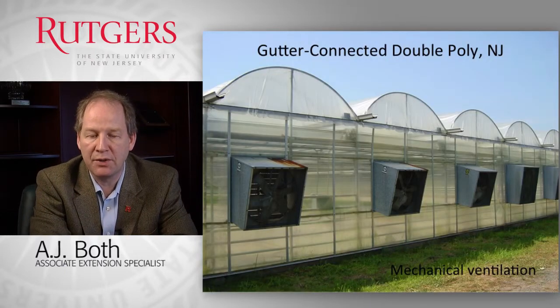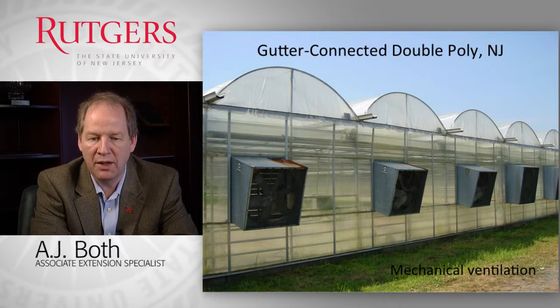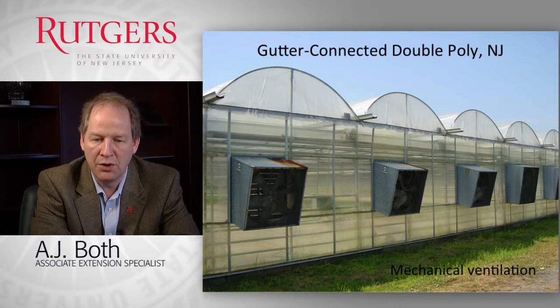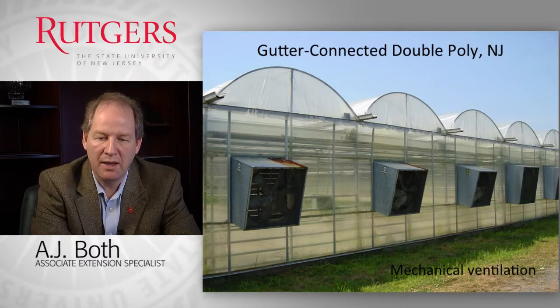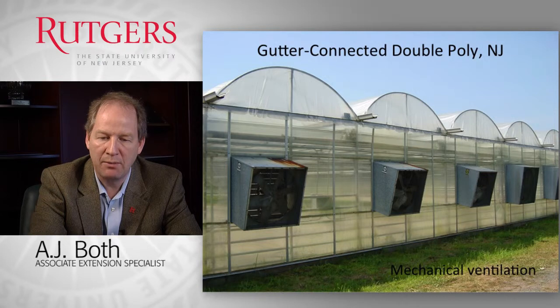An example of a gutter-connected greenhouse: we use this compared to the freestanding hoop style to reduce the total surface area. In this case it's a heated greenhouse with a ventilation system. We reduce the unit surface area per unit growing space and thus reduce the heat loss per unit growing space, saving energy compared to freestanding houses. Although freestanding houses can be individually controlled, so sometimes it makes sense to have them. When you grow larger batches of plants that require similar conditions, gutter-connected houses can be very effective.